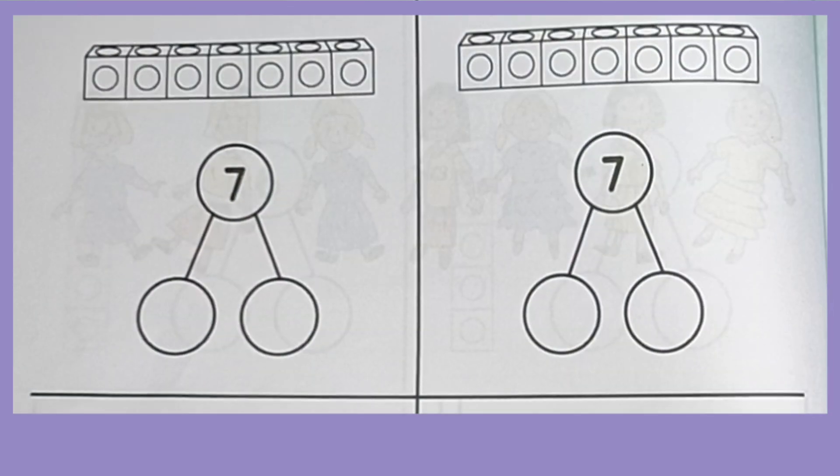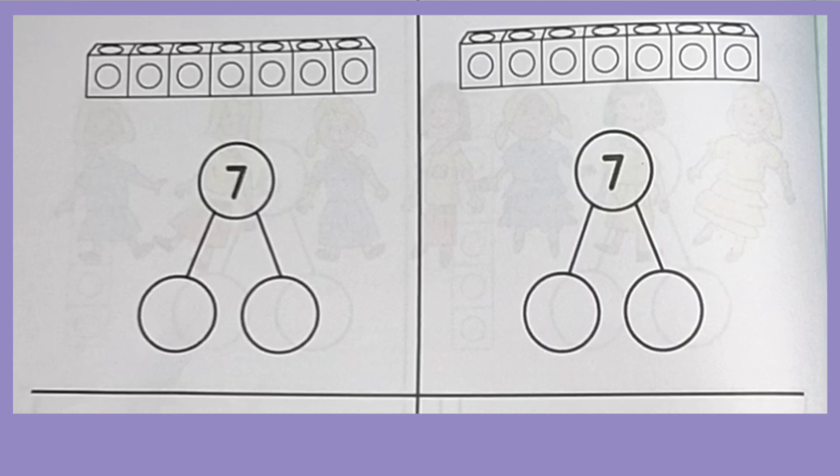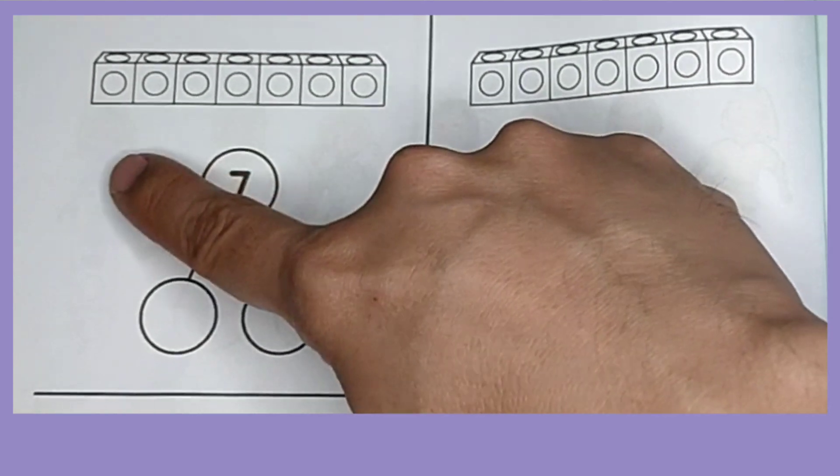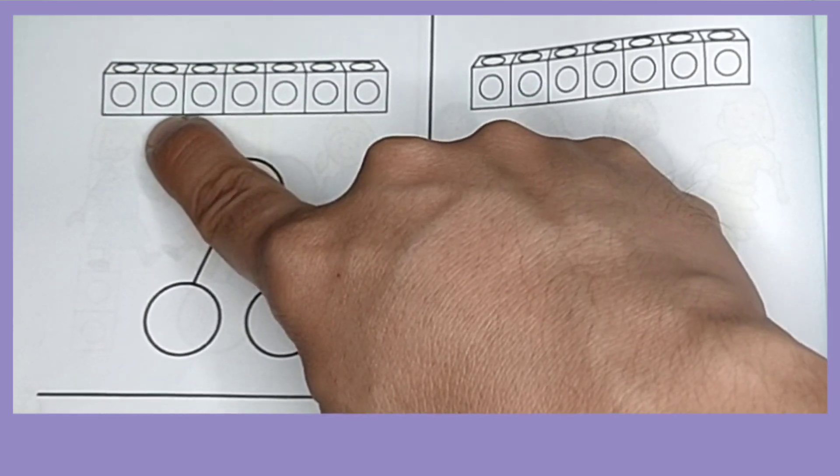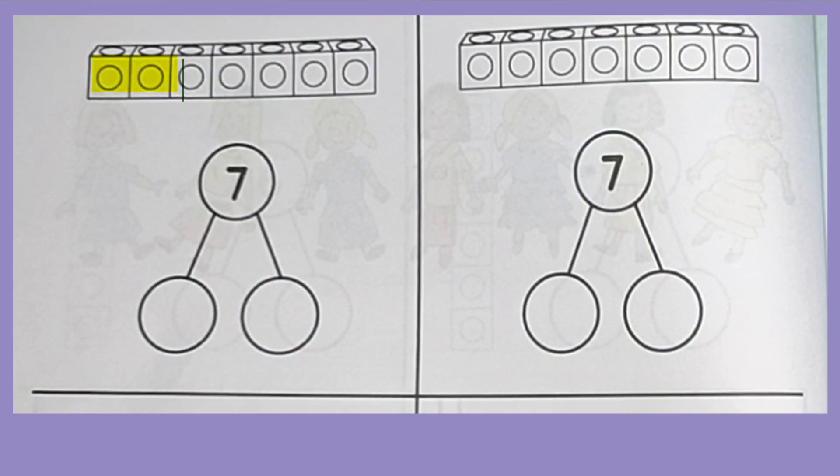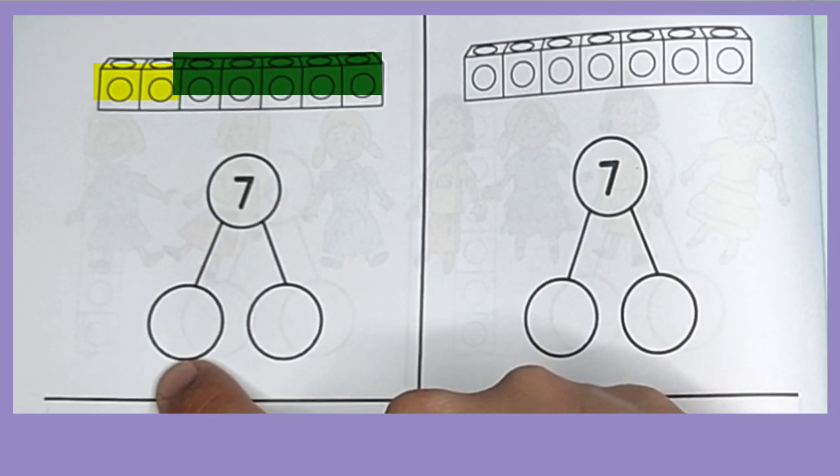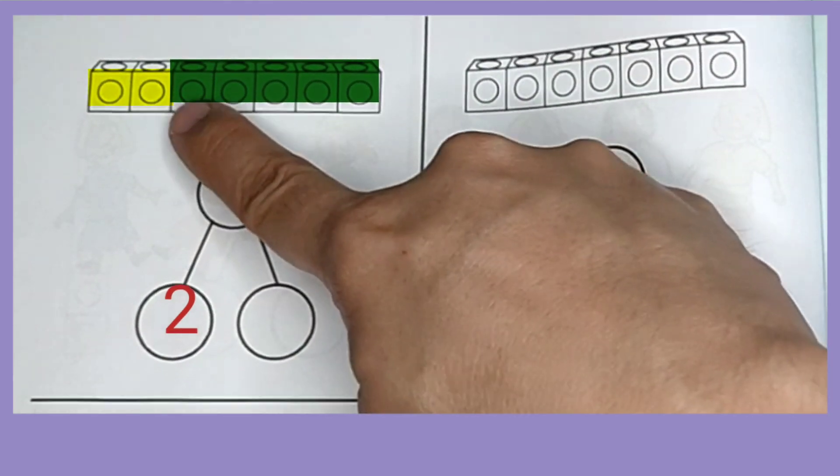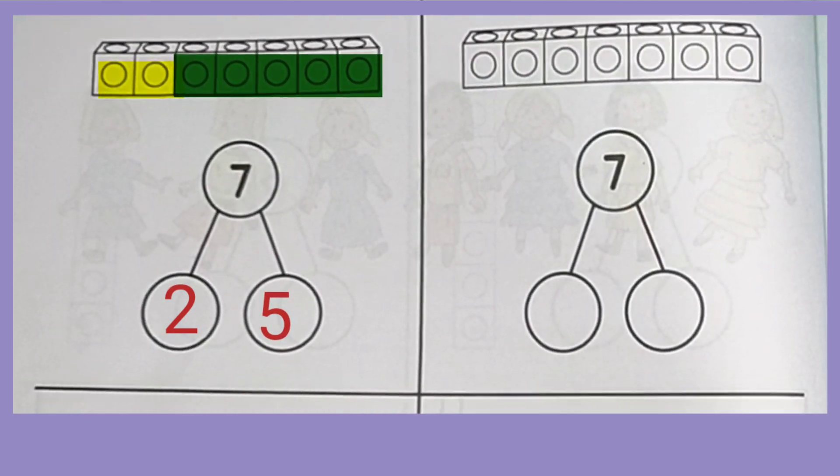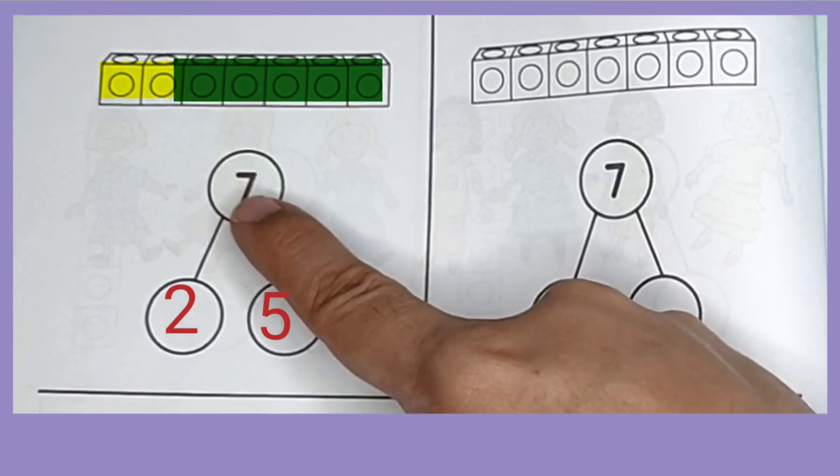We are going to color these cubes using two different colors. We can group them in whatever way we like. Let's color the first two yellow, and let's color the rest of them green. So, here we have one, two. Two yellow cubes. One, two, three, four, five. Five green cubes. Two and five make seven.